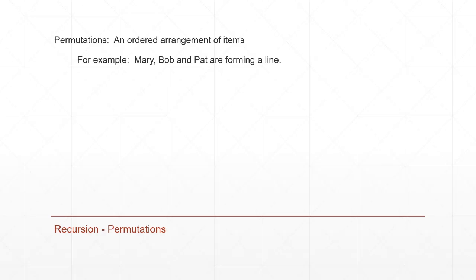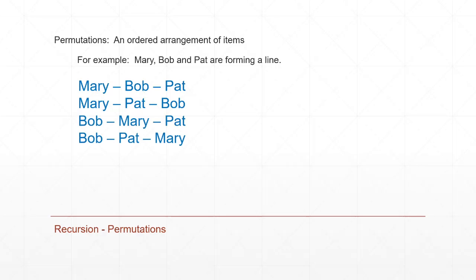For example, if we have Mary, Bob, and Pat, and they're trying to form a line, we have a couple of options. Mary can go first, then Bob, then Pat. Or Mary is still first but Bob and Pat switch. That covers all possibilities for Mary going first. Bob can also go first — Bob, Mary, Pat or Bob, Pat, Mary. And of course Pat can go first too. So there are six possible permutations if we have three people.